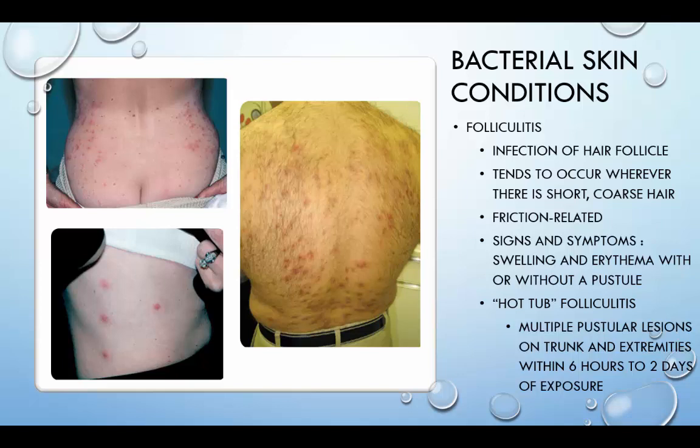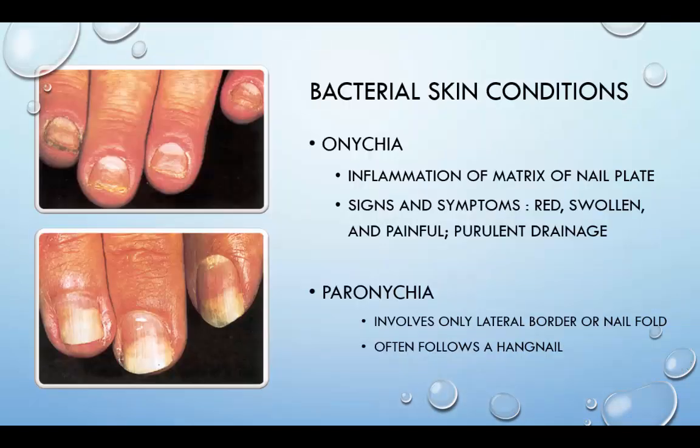Hot tub folliculitis presents as multiple pustular lesions on the trunk and extremities within 6 hours to 2 days of exposure to a hot tub. Onchia is inflammation of the matrix of the nail plate. Signs and symptoms include red, swollen, and painful nails, and purulent drainage. Paronychia is often seen in individuals whose hands are frequently immersed in water or mud, such as football linemen. In severe cases, it may require systemic antibiotics and drainage of localized pus. Paronychia only involves the lateral border or nail fold, and often follows a hangnail.